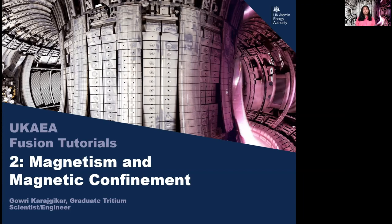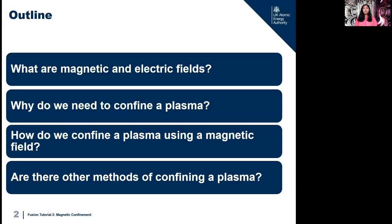This second fusion tutorial is about magnetism and magnetic confinement and how they relate to fusion energy. Today I'm going to be answering these four questions: What are magnetic and electric fields? Why do we need to confine a plasma? How do we confine a plasma using a magnetic field? And are there other methods of confining a plasma?